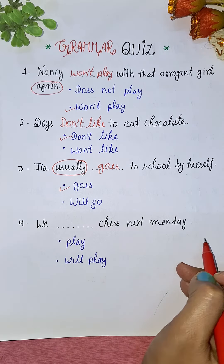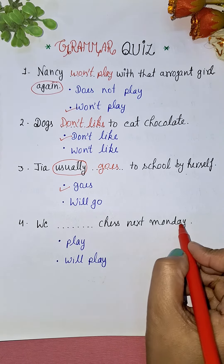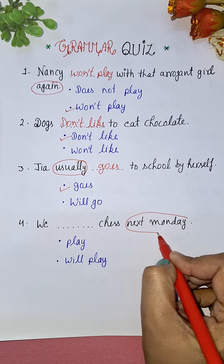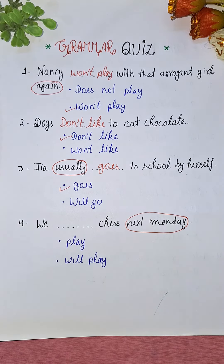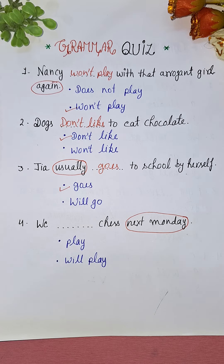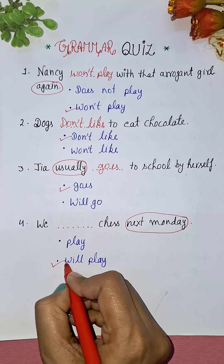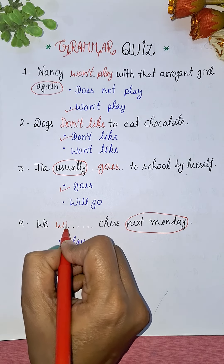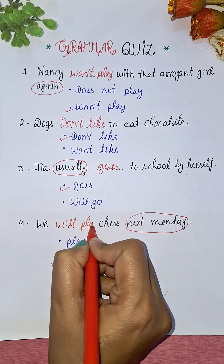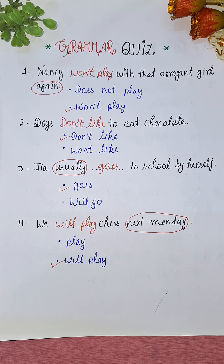Next: We dash chess next Monday. 'Next Monday' is your keyword here — it signals future tense. So the answer is 'We will play chess next Monday.' We will play chess next Monday.